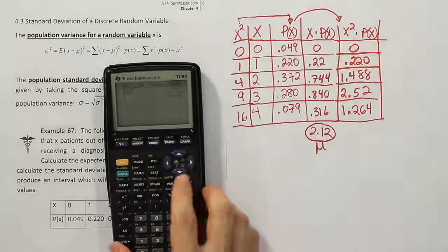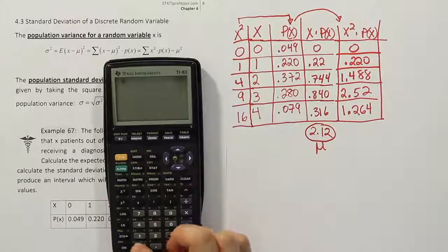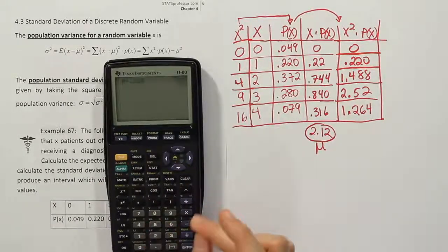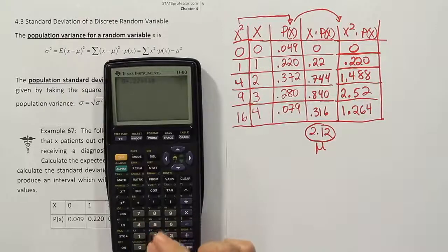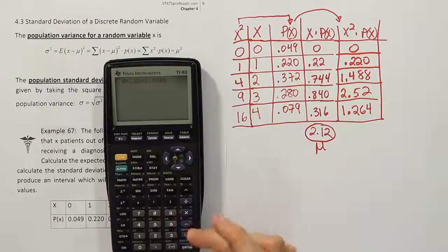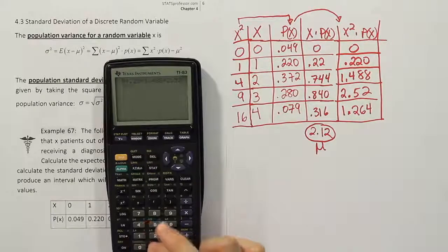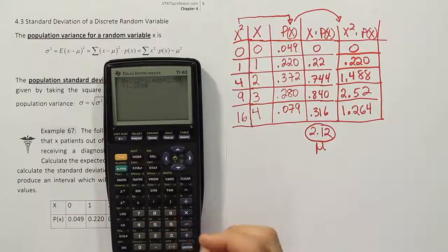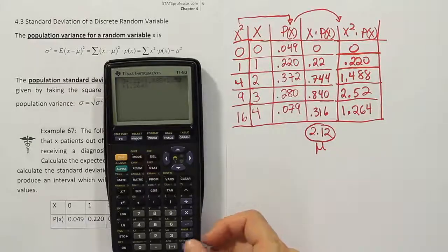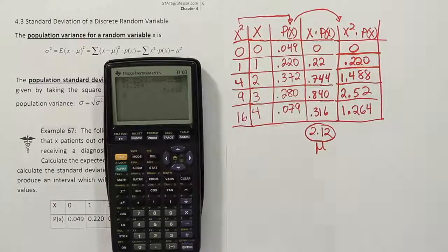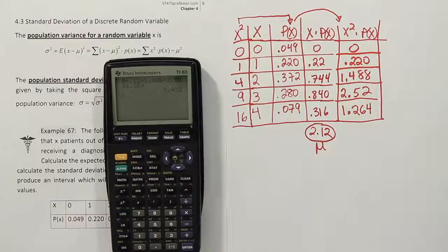To do that, we're just going to do what you expect, right? Just add them all together. 0 plus 0.22 plus 1.488 plus 2.52 plus 1.264. 1.264. And when we're done, we get 5.492.